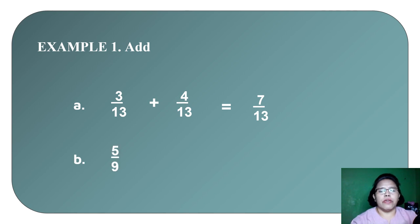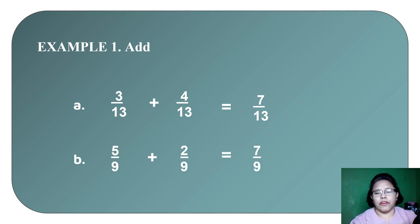Letter B: we have 5 ninths plus 2 ninths. So the total is 7 ninths.